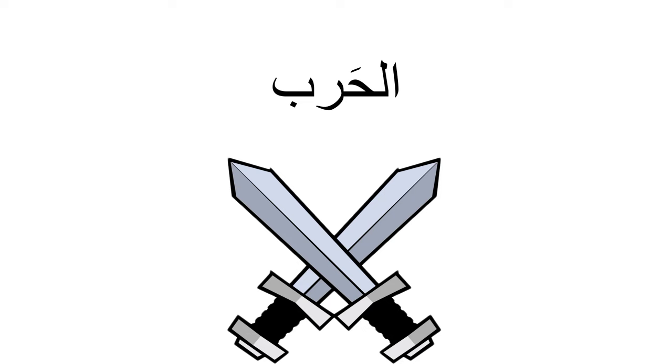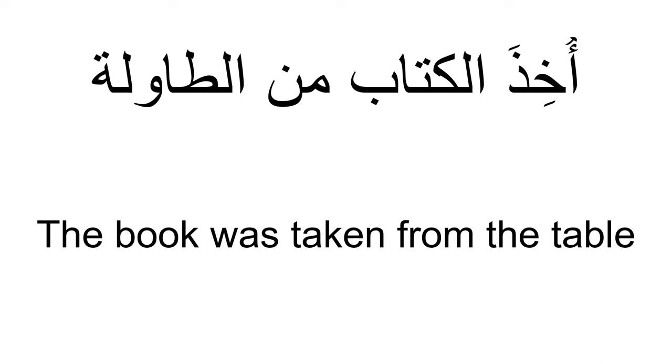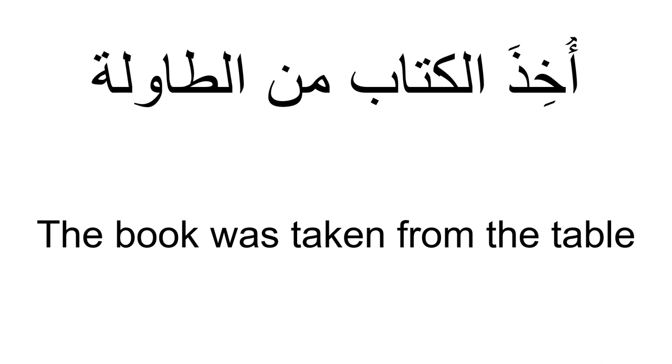Now let's move to verbs and some grammar rules. We have أُخِذَ — this is a verb in the passive form. The active form is أَخَذَ. See how التشكيل can make the difference between the meaning of the two words — very important. أُخِذَ means 'taken' or 'was taken,' and it is related to the concept of taking or seizing something. So أُخِذَ is used to indicate that something was taken or seized in the past. Example: أُخِذَ الكتاب من الطاولة. And: سرا العروش أُخِذَ من رواية لعبة العروش — so the Game of Thrones series was taken from لعبة العروش.